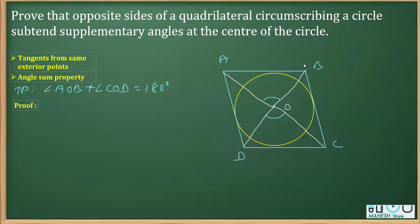Now write the points of contact. Let's say the points of contact are P, Q, R, and S. Join the center O with each point of contact. This is a useful construction, as you may have done in several questions on tangents.